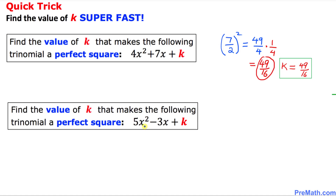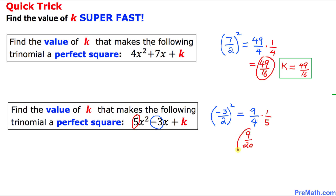Here is our final example. In this trinomial, the coefficient of x, our middle number, is negative 3. Divide by 2 and then square it, giving us positive 9 over 4. Now look at the leading coefficient, which is 5. We divide this fraction by 5, which is the same as multiplying by 1 fifth. That gives us 9 over 20, and that is our k value. So k turns out to be 9 over 20. That is our final answer.